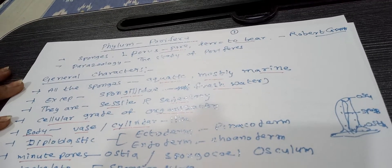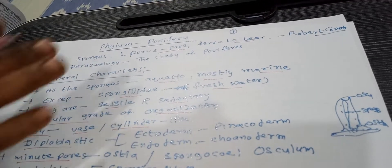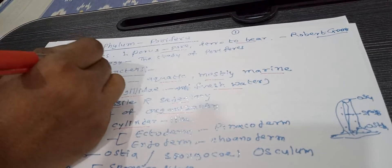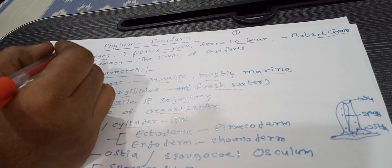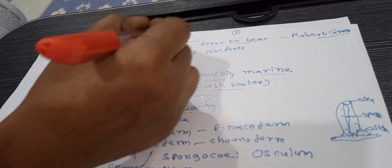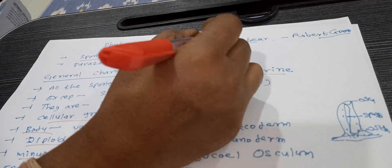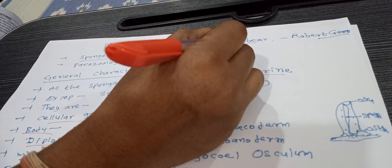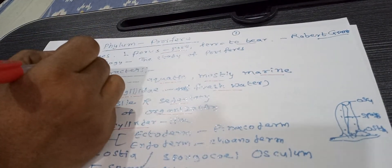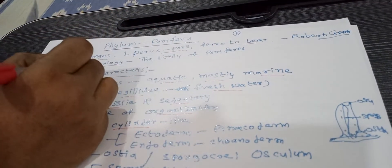Good morning everyone. I am Anu. Today I am discussing Phylum Porifera. The Phylum Porifera includes animals that are commonly called sponges. The term Porifera means porous — 'pori' means pore and 'ferous' means to bear — and was coined by Robert Grant. The study of Porifera is called Parazology.